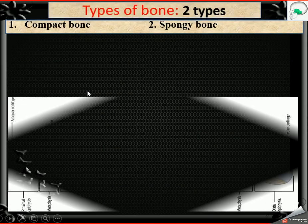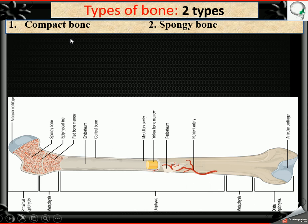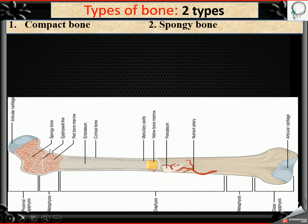Now the types of bones. On the basis of density, hardness, and structure, bones are generally divided into two types. First is compact bone, and another is spongy bone. In a long bone, the middle part is compact bone, and the top portion is spongy bone.